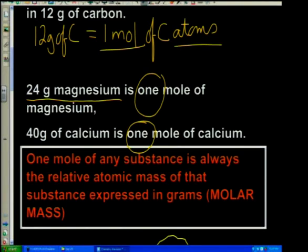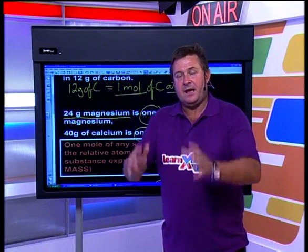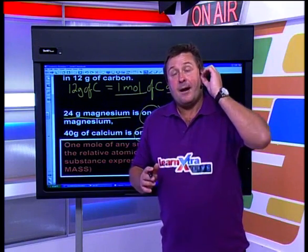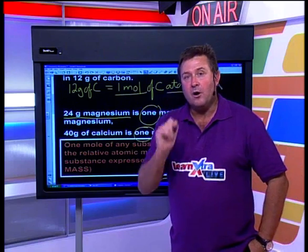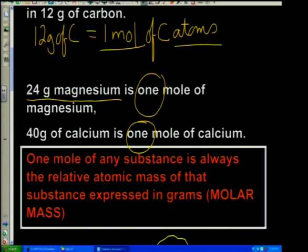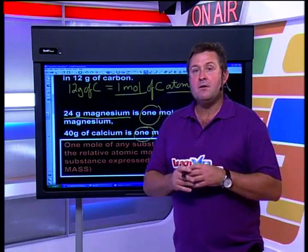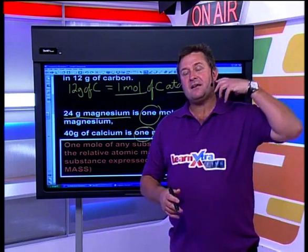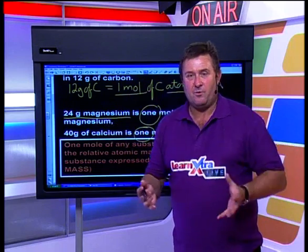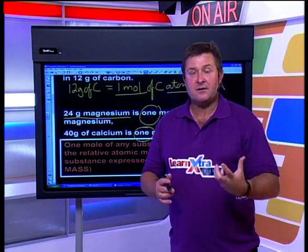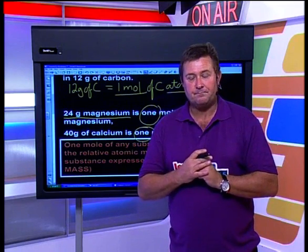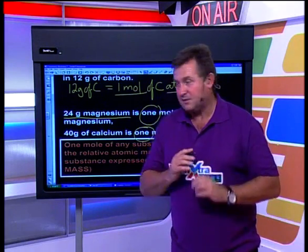It's very important to understand that one mole of a substance is represented by the relative atomic mass expressed in grams — this is called the molar mass. We can talk about the molar mass of iron, sulfur, oxygen, gold — just go to the periodic table, look at the relative atomic mass, express it in grams, and that's the molar mass representing one mole.